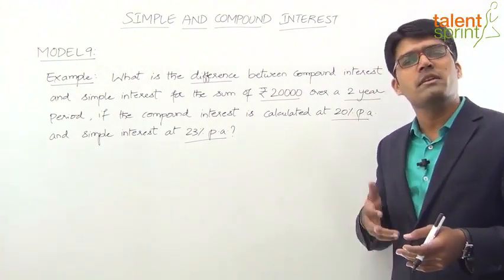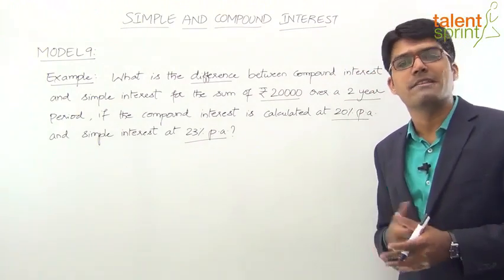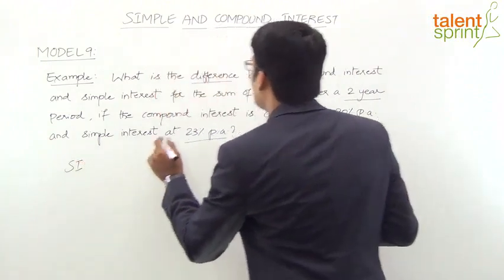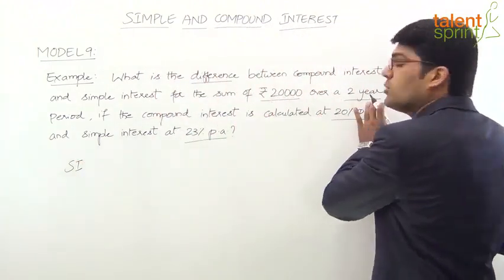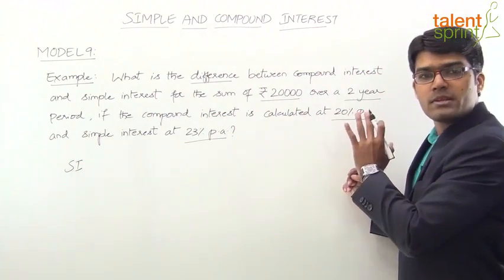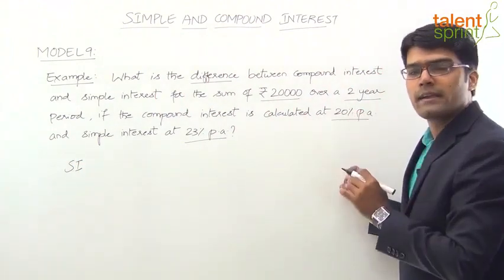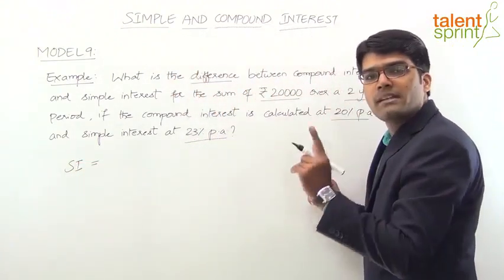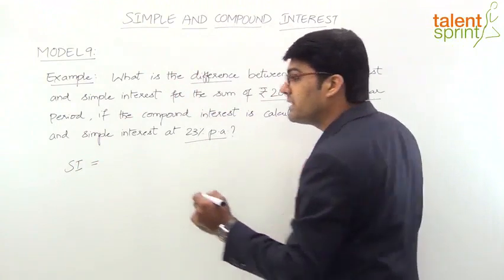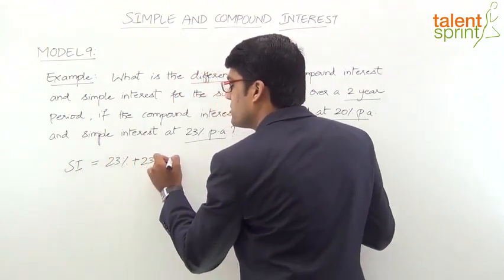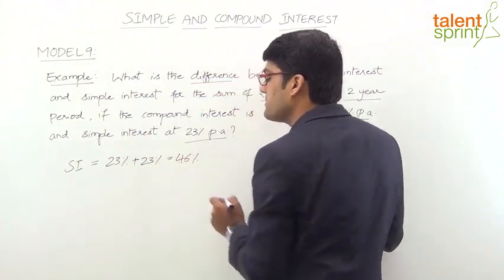Simple interest rate is 23% per annum, 1 year 23%. So 2 years total interest rate is 23% plus 23%. This is 46%. Total simple interest is 46%.